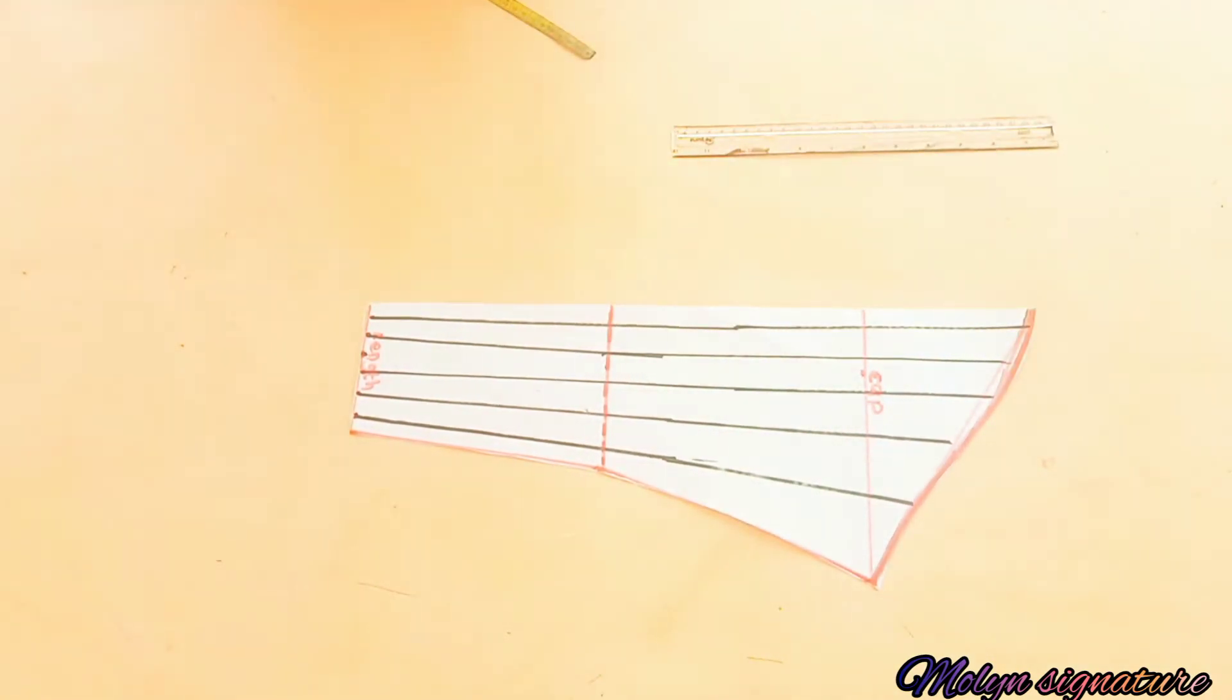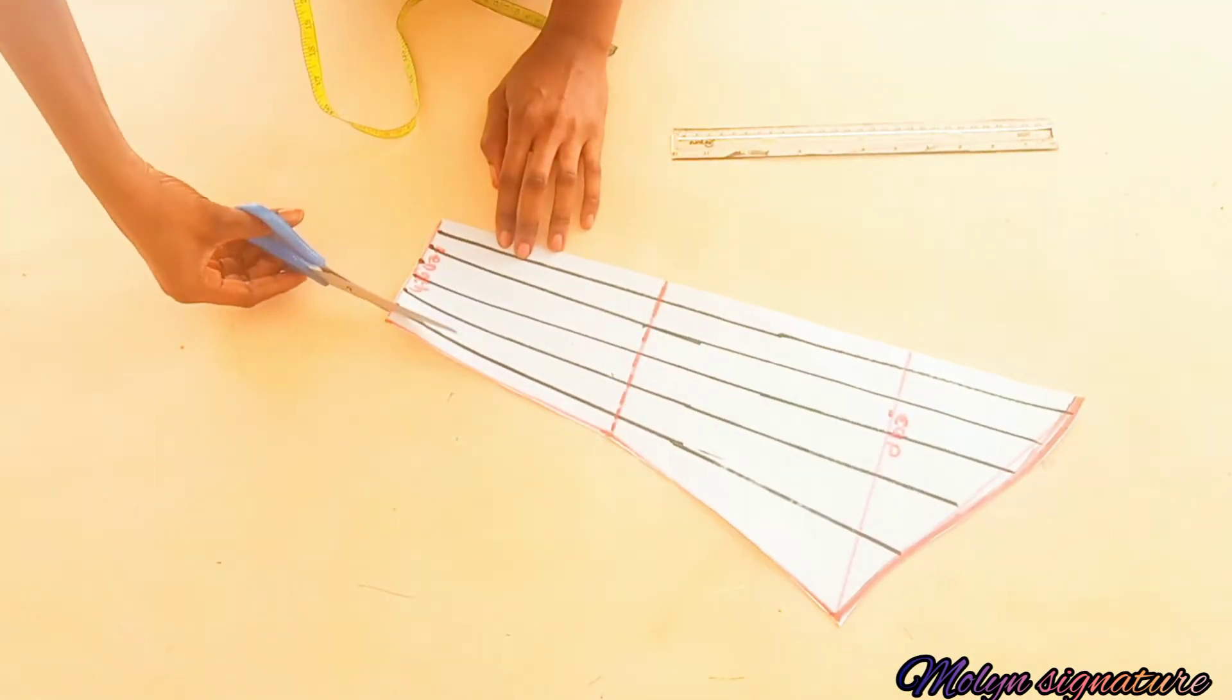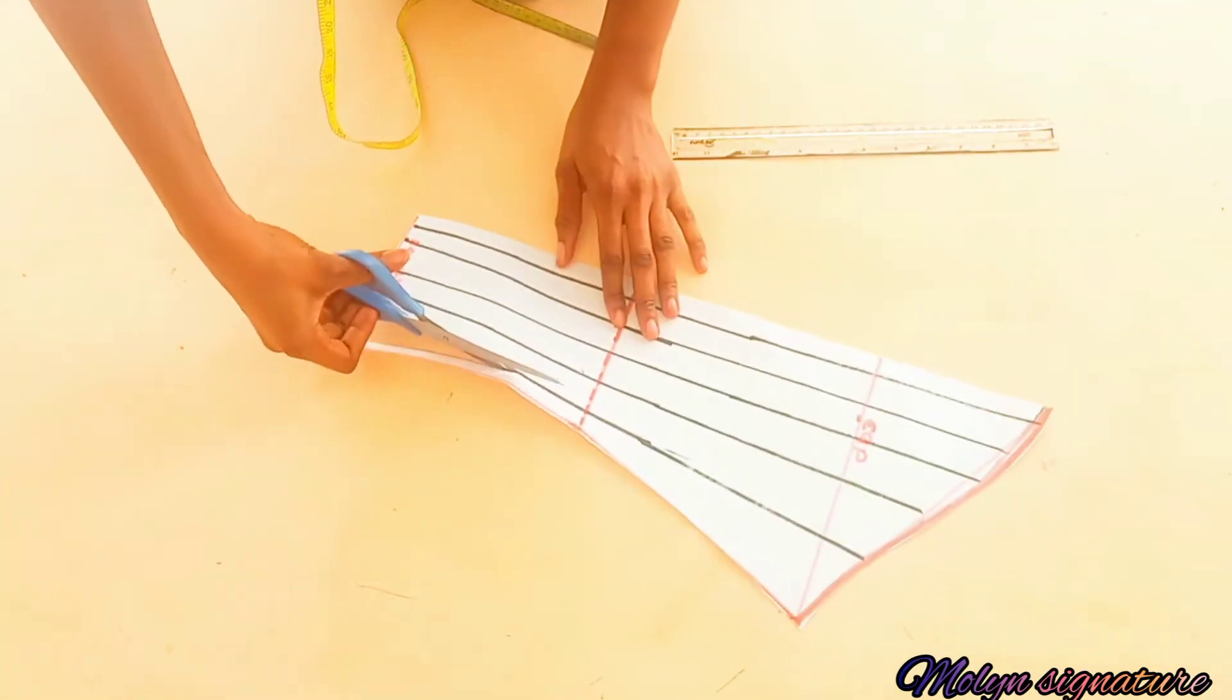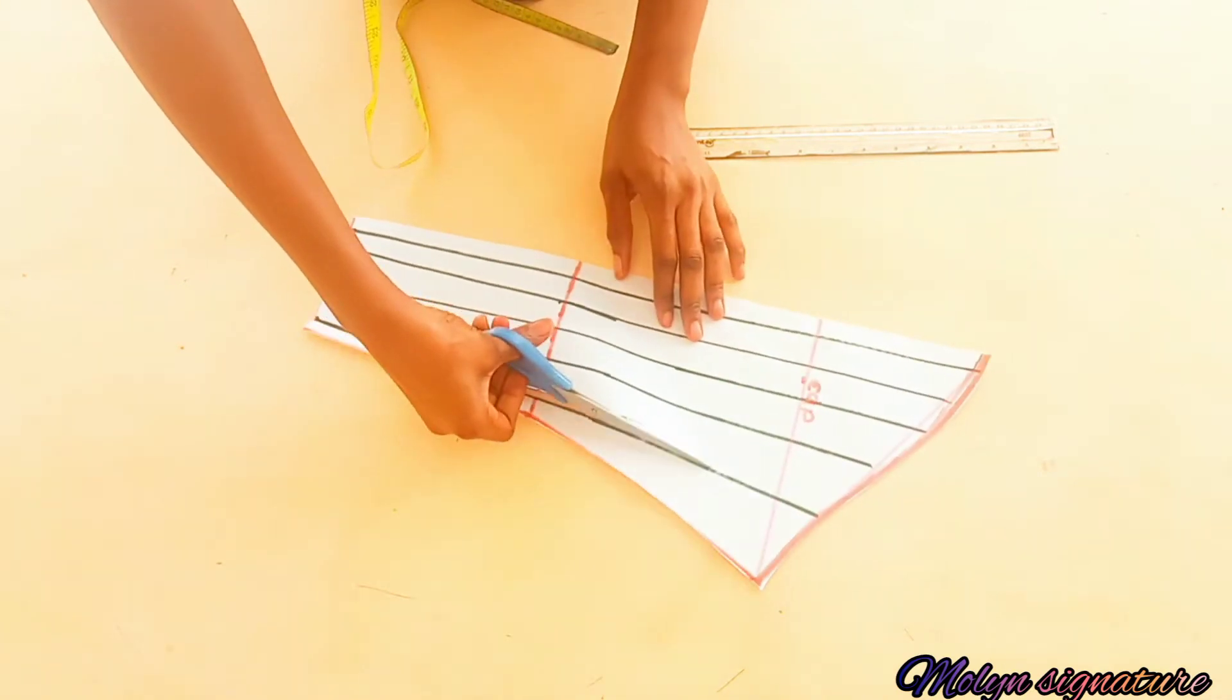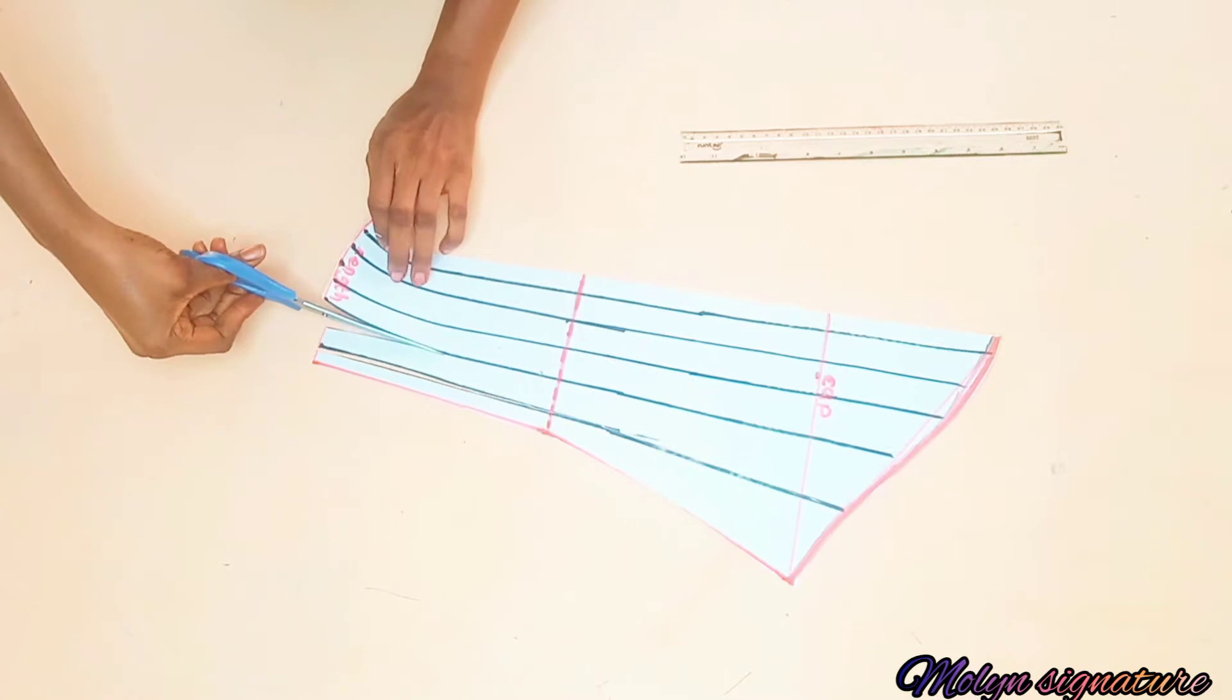Now that I am done, I'm going to be using my scissors to cut from this part all the way to the top, leaving just a little space to hold the papers at the tip together. When cutting through the lines, remember not to cut it entirely. Leave a little space to hold the papers together.